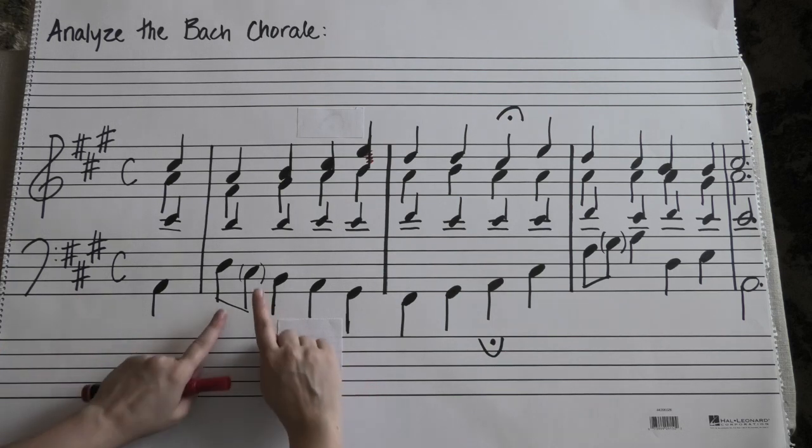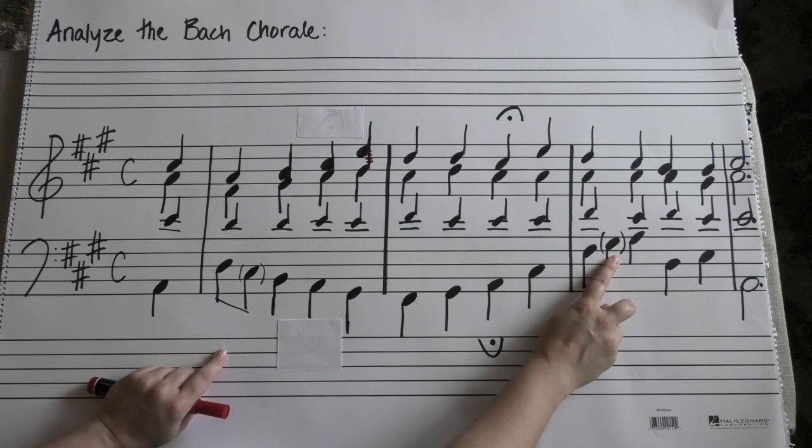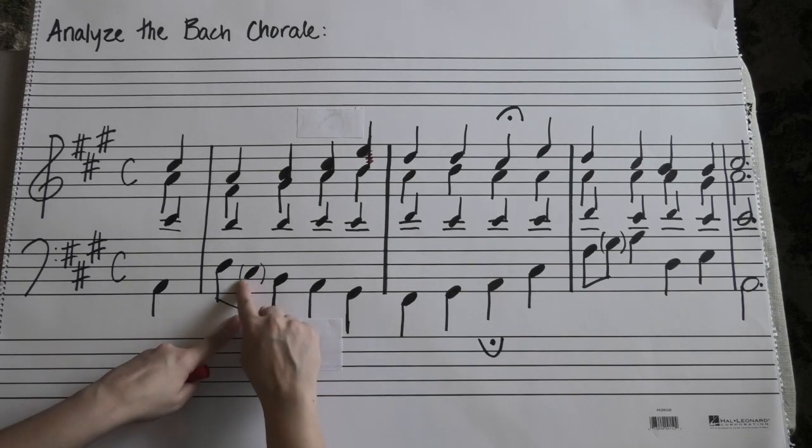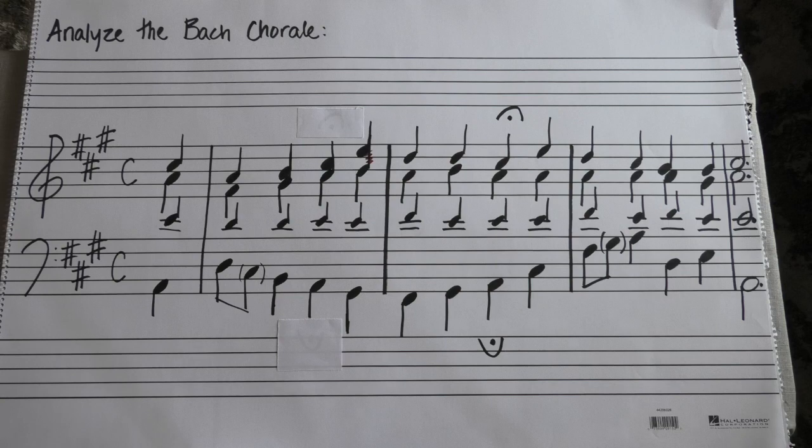Beware there are a couple of things in parentheses. This one right here, this one right here, they happen a lot in chorales. And those are non-chord tones. We'll talk about different types of non-chord tones later. You have passing tone, neighbor tone, all sorts of things like that. For now, don't analyze them. Just leave them there. Analyze what's on either side of them as a four part chord. Okay, ready, go.